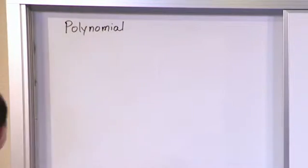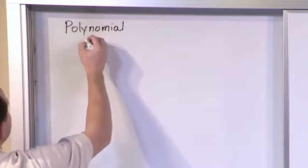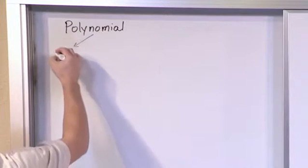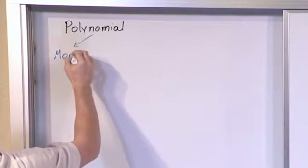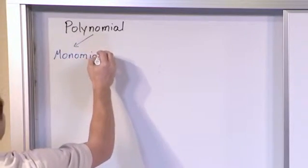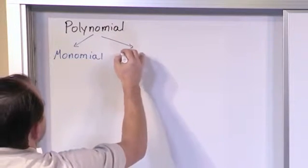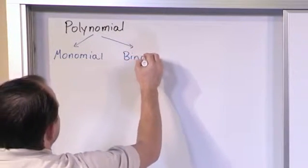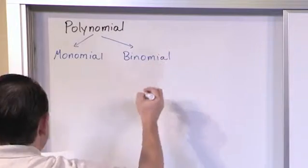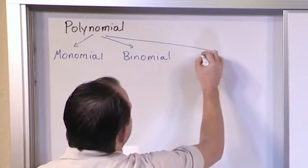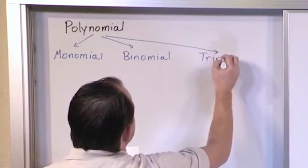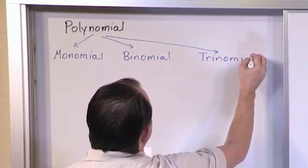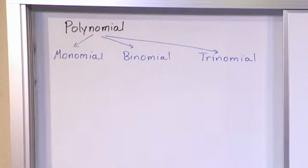Now, before we do that, let me tell you that there's really three main types of polynomials that we're going to talk about in the context of this class that you'll encounter in most algebra. One of them's called a monomial. One of them is called a binomial. And the other one is called a trinomial.